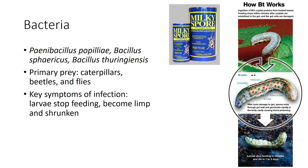Thus, P. popilliae is useful in biological control by introduction or inoculation, although it is expensive to produce. The strains of Bacillus thuringiensis, also called Bt, have a broad spectrum of activity against larvae of many species of Lepidoptera, Coleoptera, and Aquatic Diptera, but can be used only as an inundated insecticide because of lack of persistence in the field.